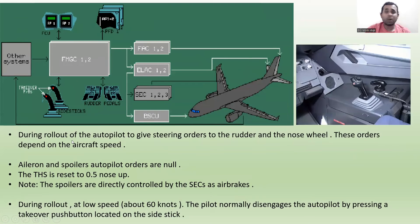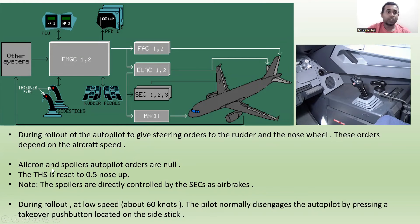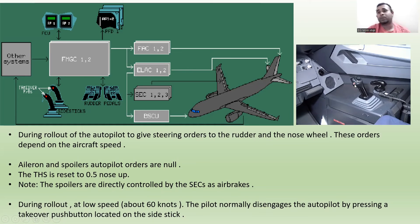During rollout, the autopilot gives steering orders to the rudder and the nose wheel. These orders depend on the aircraft speed, and the BSCU will be used at this time. Aileron and spoiler autopilot orders are not active during rollout. The THS is reset to 0.5 degrees nose up, and the spoilers are directly controlled by the SEC as airbrakes. At low speed, around 60 knots, the pilot normally disengages the autopilot by pressing the takeover push button located on the sidestick.